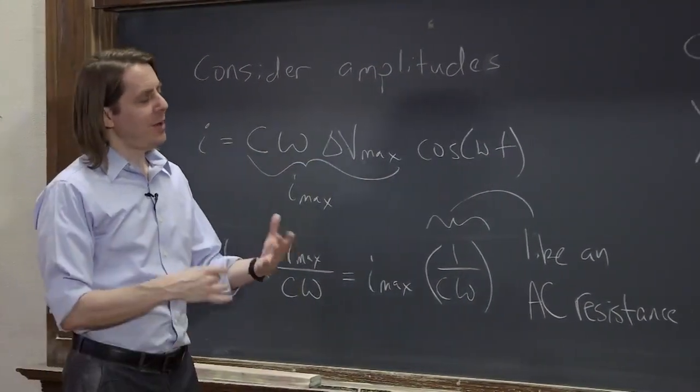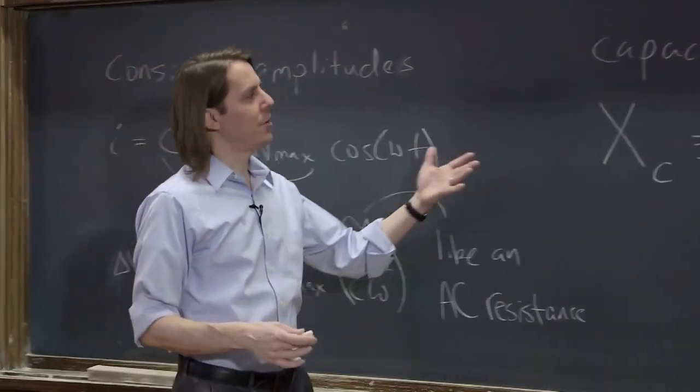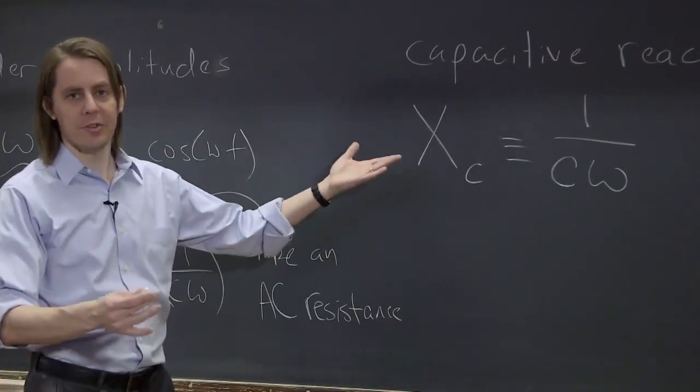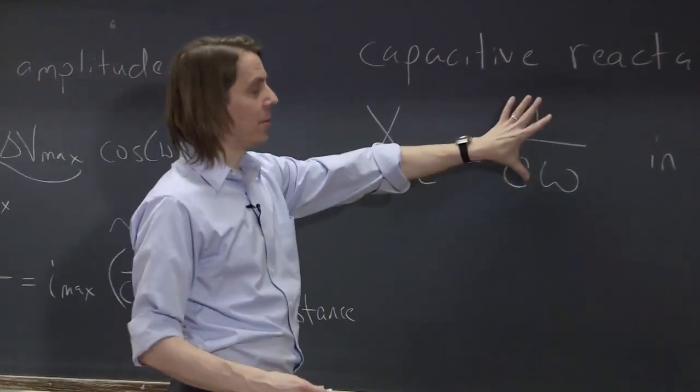It just shows you that a capacitor is different from a resistor. A resistor has a reactance—it's just the resistance. For that it's just R and it's constant. But for a capacitor,